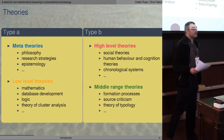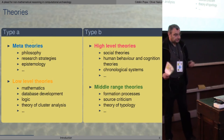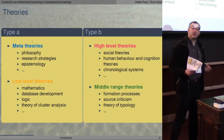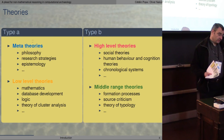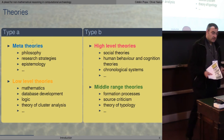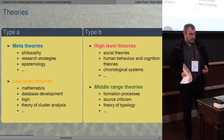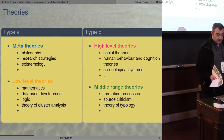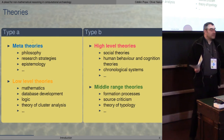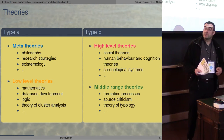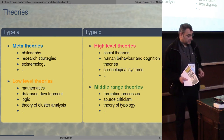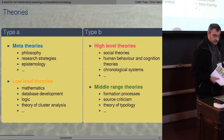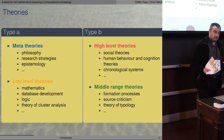Here we have some examples. Meta-theory can be philosophy or research strategies. Low-level theories can be mathematics, database theory, and similar things. High-level theories are social theories, theories on human behavior and similar things. And middle-range theories are dealing with formation processes and so on.